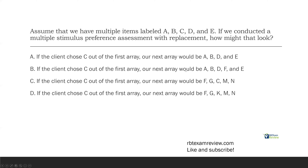Answer B: if the client chose C out of the first array, the next array would be A, B, D, F, and E. The issue is that with a with-replacement strategy, whatever item is chosen is put back. C was chosen but it wasn't put back, so we can eliminate B. Answer C: if the client chose C, the next array would be F, G, C, M, N. This looks good — C was chosen, it was put back, and the other four were replaced. Hence, multiple stimulus assessment with replacement. C looks perfect. Answer D: if the client chose C, the next array would be F, G, K, M, and N — same issue as A and B, C is not replaced. The only answer that actually replaces C is answer C.